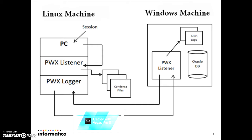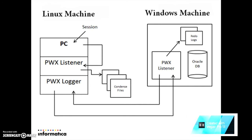In the example which I will be demonstrating, the setup is like this. On a Linux machine, I have installed PC and I have a PWX instance as well. The logger will be running on this system. On the Windows machine, I have my database and a listener running as well. CCT files will be created on the Windows machine and the condensed files will be created on the Linux machine.